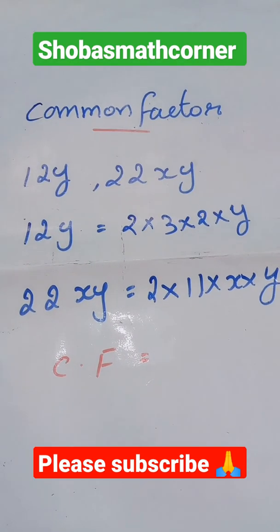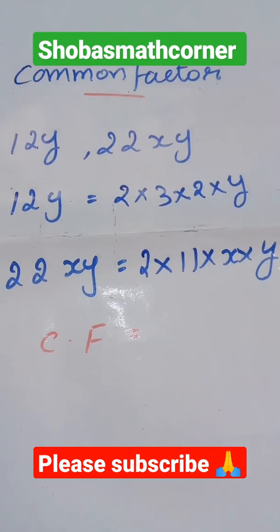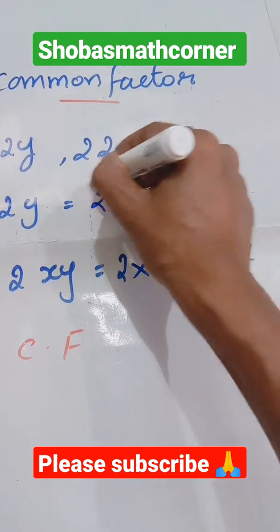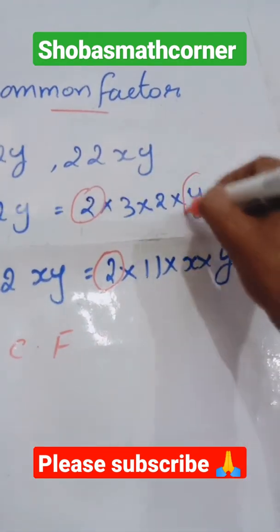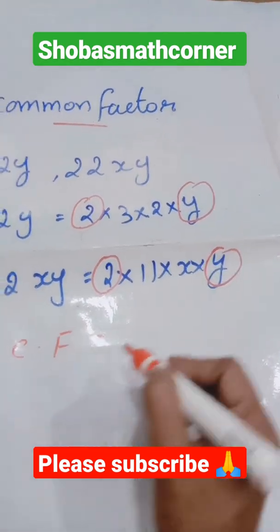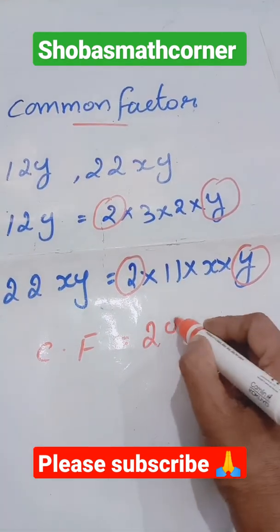So which are the common factors in these two? Very simple. Just round off the common things. 2 is common and the variable y is also common. So our common factors are 2y.